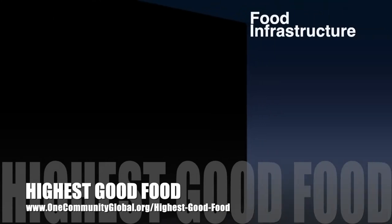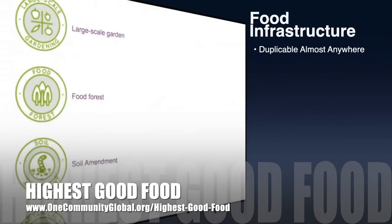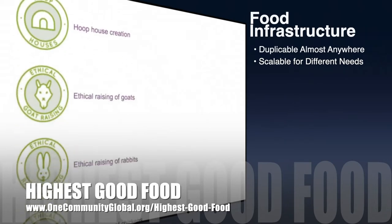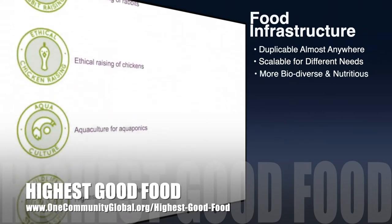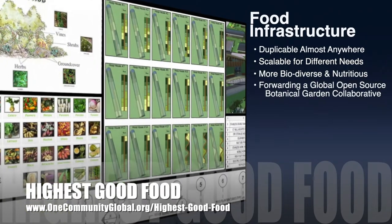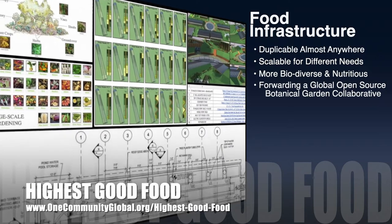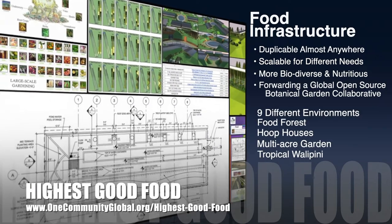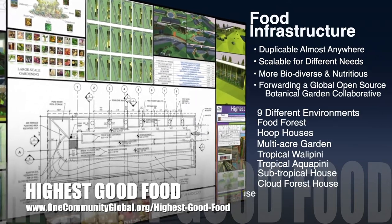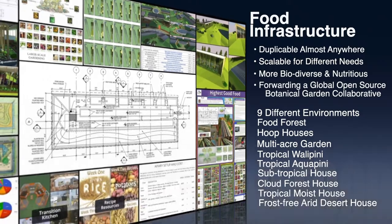One Community's approach to highest good food is duplicable almost anywhere, scalable for different needs, more biodiverse and nutritious, part of forwarding a global open source botanical garden collaborative, and includes nine different free shared and duplicable growing environments.